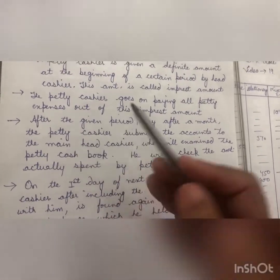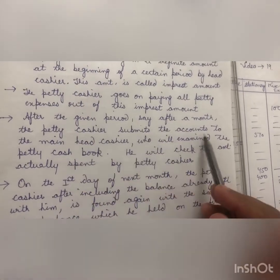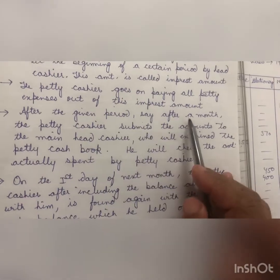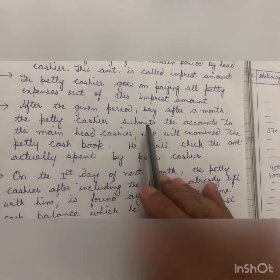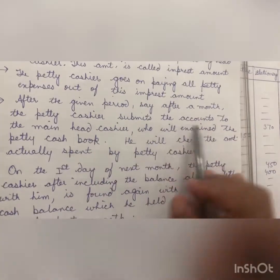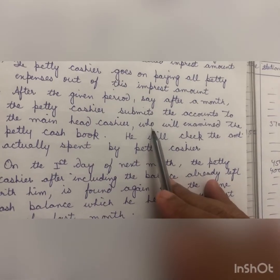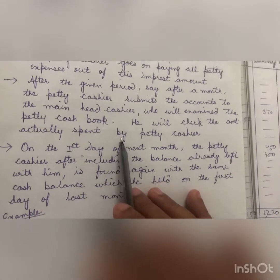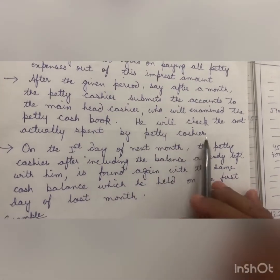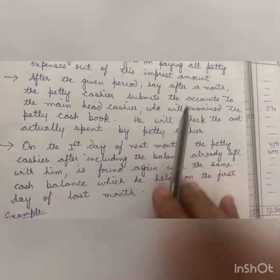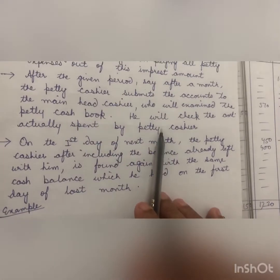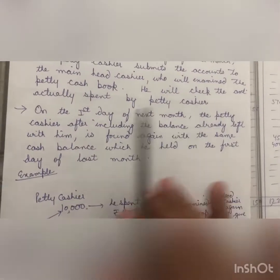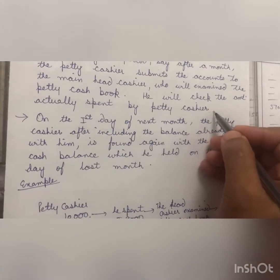After a given period — say, at the end of a month — the petty cashier submits the account to the main head cashier. Petty cashier apna saara hisaab kitaab bana kar head cashier ko de dega. The head cashier will examine the petty cash book and check the amount actually spent by the petty cashier — kitna kharch hua imprest amount mein se.